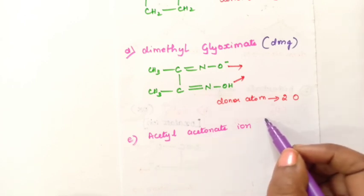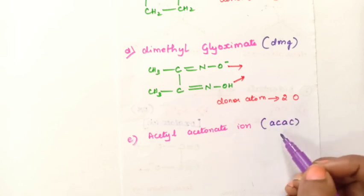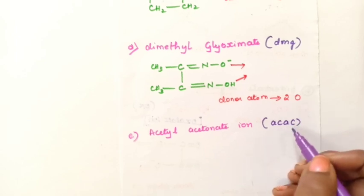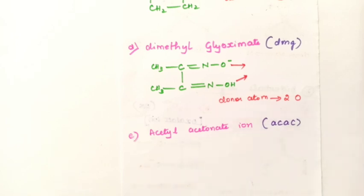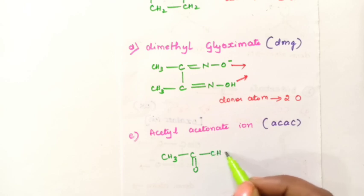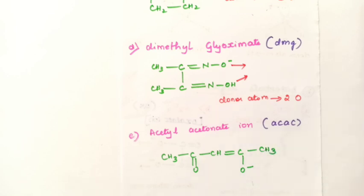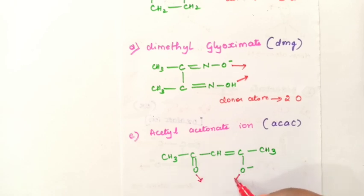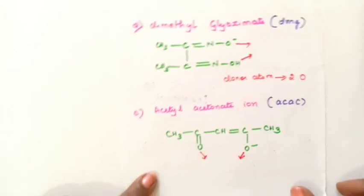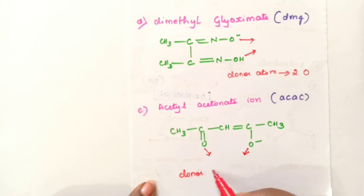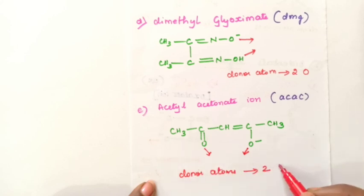Next is acetylacetonate ion, short form ACAC — remember this, as short forms are usually given in coordination compound problems. The structure is CH3, CO, CH double bond, CO minus, CH3. One oxygen atom forms one coordinate bond and the other oxygen forms one coordinate bond, giving two coordinate bonds total. Therefore this is also a bidentate ligand. Donor atoms are two oxygen atoms.